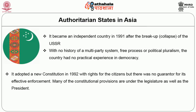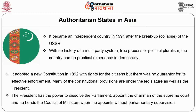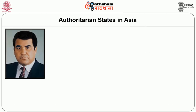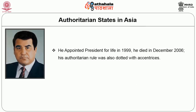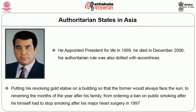Many constitutional provisions place authority under both the legislature and the president. The president has the power to dissolve parliament and appoints the chairman of the Supreme Court and the heads of the Council of Ministers without parliamentary supervision. The president was appointed for life in 1990 and died in December 2006. His authoritarian rule was dotted with eccentricities — from placing a revolving gold statue on a building so it would always face the sun, to renaming the months of the year after his family, to ordering a ban on public smoking after he himself had to stop following major heart surgery in 1997.